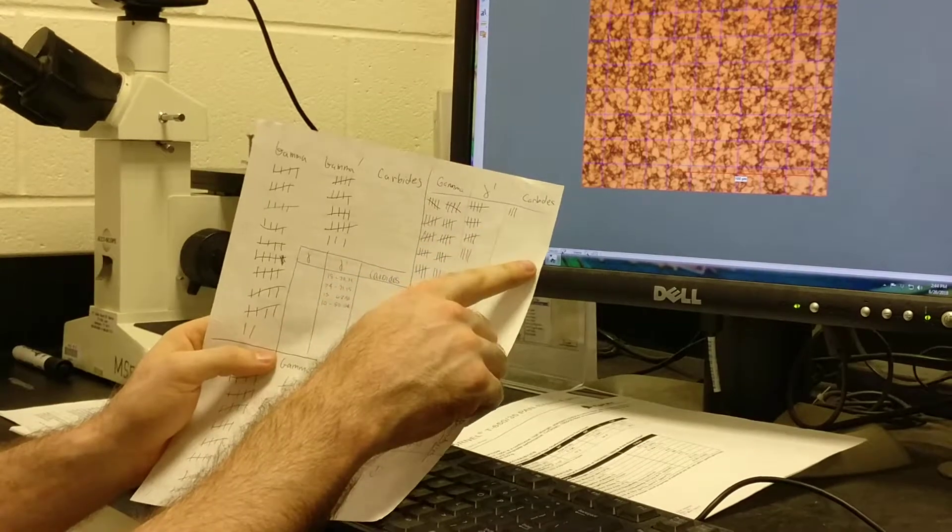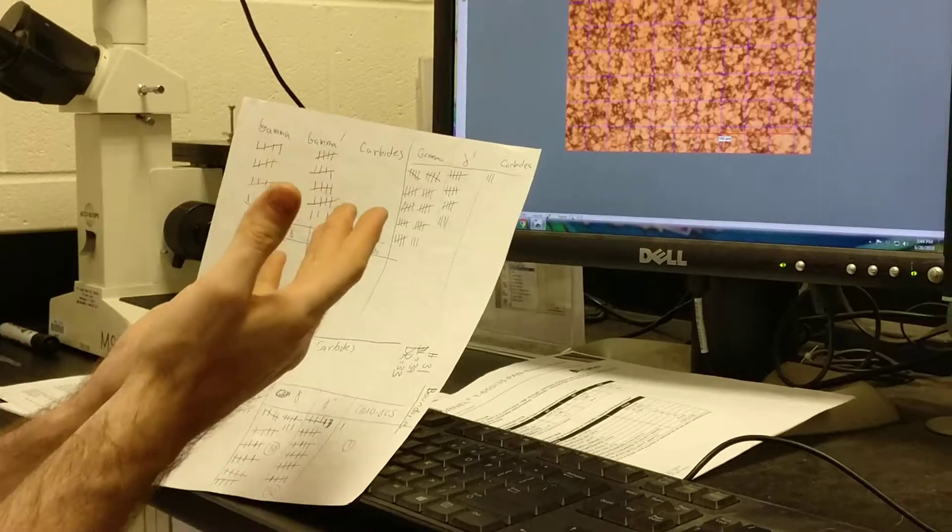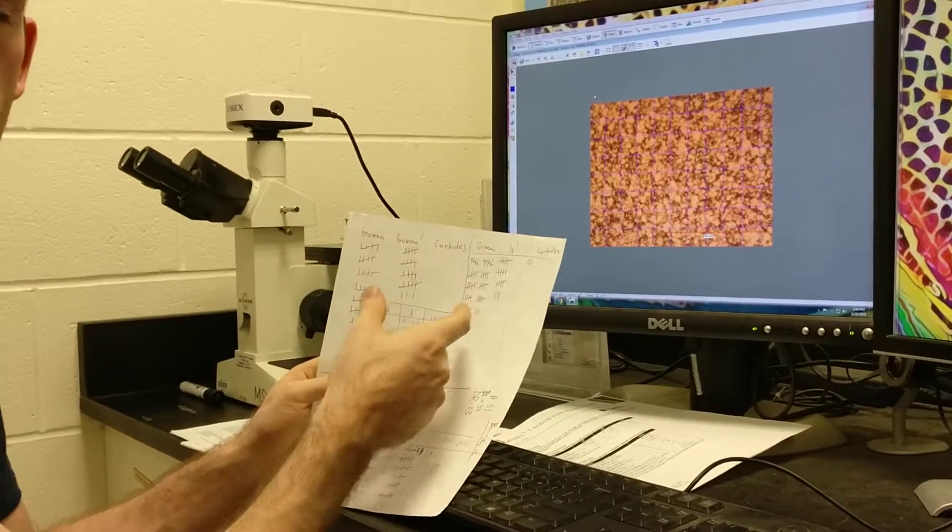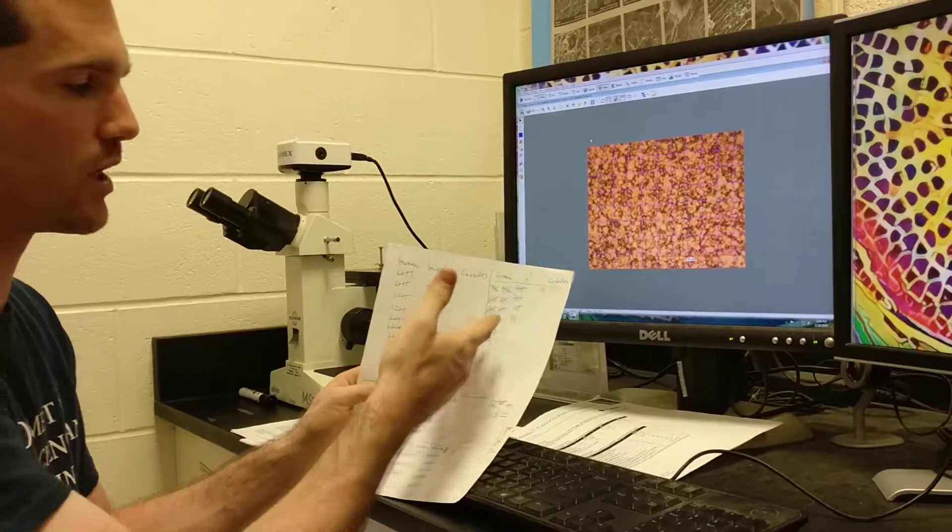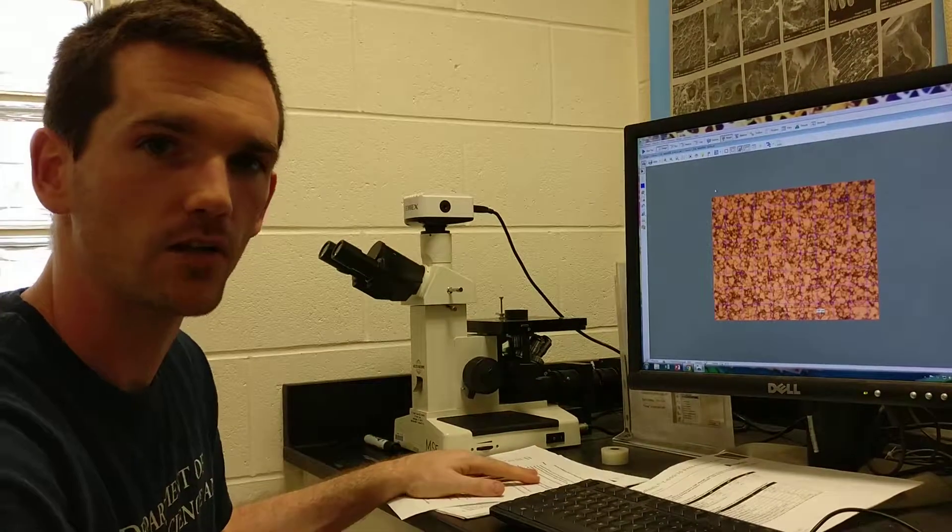We essentially will keep a tally list of each of the three phases that are in this material: gamma, gamma prime, and carbides. Then we'll note down tally marks for each intersection, which phase is that intersection in. We'll count those and divide each of those by 72 and we'll get a percentage for each of those phases.